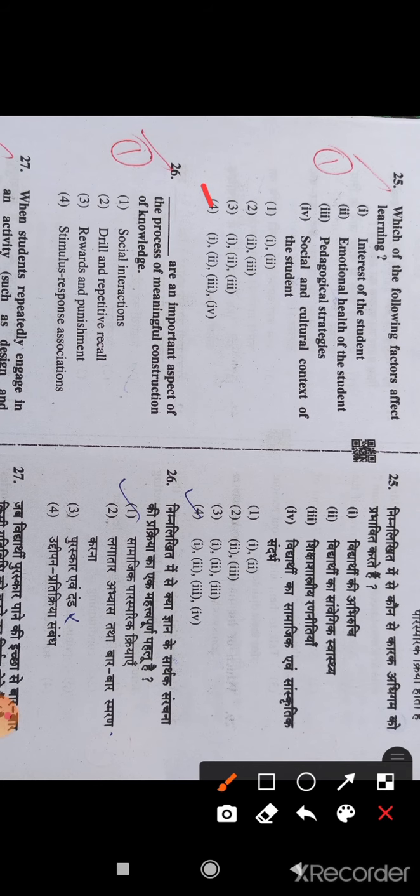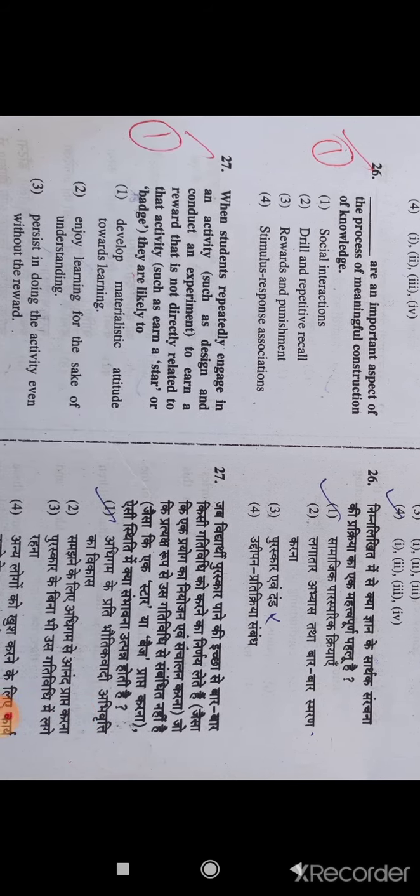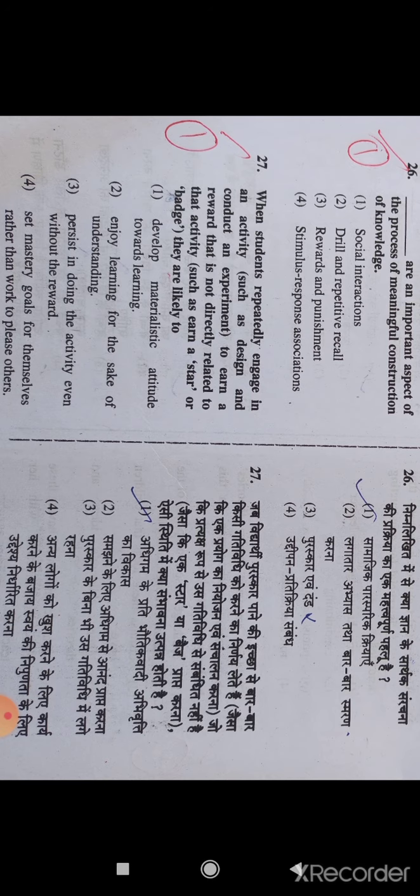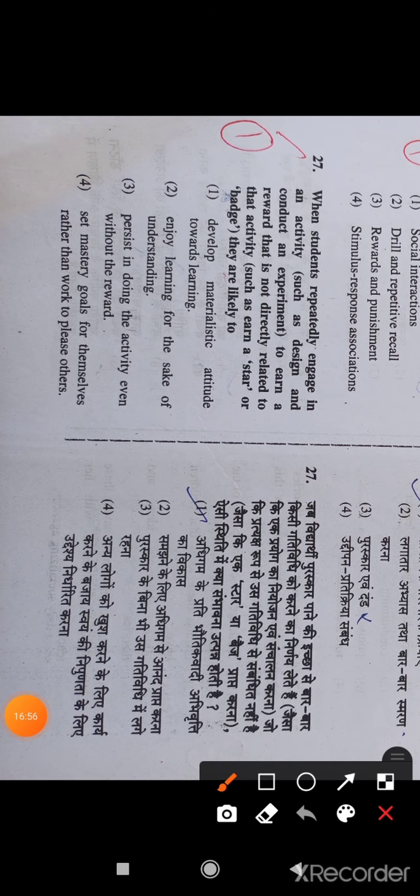Question number 26: Social interactions are an important aspect of the process of meaningful construction of knowledge. Option A is the right answer. Social interaction is important for meaningful construction of knowledge.